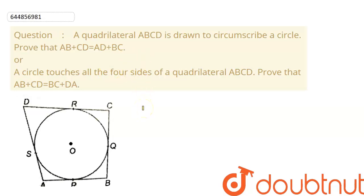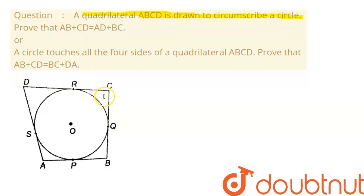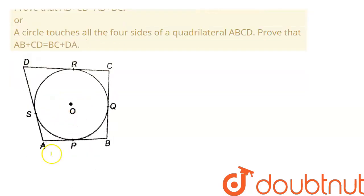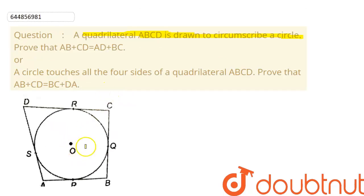Hello everyone. Today we are going to discuss one question on circles. In this question, we are given that a quadrilateral ABCD is drawn to circumscribe a circle, as shown in the figure. This quadrilateral ABCD circumscribes the circle centered at point O. We need to prove that AB plus CD equals AD plus BC.